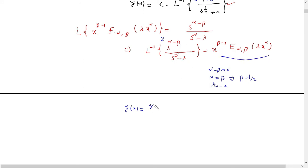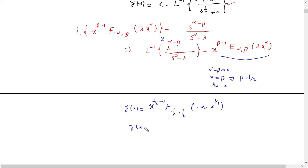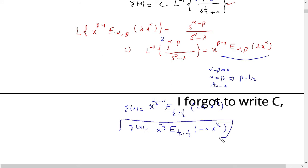Using these values — alpha equals one-half, beta equals one-half, lambda equals minus a — we can write the inverse Laplace. The solution becomes y(x) equals c times x^(beta-1) times E(alpha, beta; lambda*x^alpha), which is c times x^(1/2 - 1) times E(1/2, 1/2; minus a times x^(1/2)). This is the solution of the fractional differential equation.